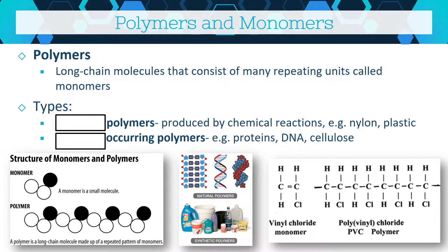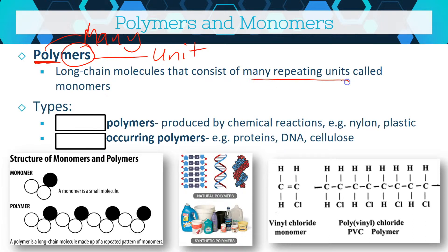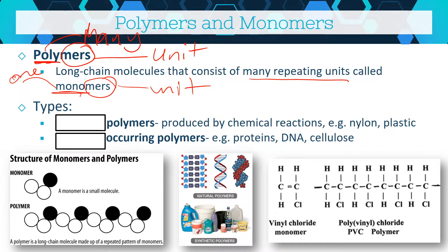First things first, we want to know a couple of key words: polymer and monomer. The word polymer starts with 'poly', which means many, and 'mer' basically means unit. So the word polymer means many units. Polymers are long chain molecules that consist of many repeating units called monomers. Mono means one, so a monomer is one unit. You can think of it like this: if a monomer is a bead, a polymer is a chain made up of those beads.